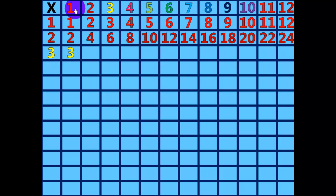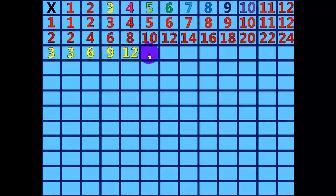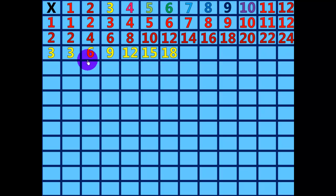3 times 2 equals 6. 3 times 3 equals 9. 3 times 4 equals 12. 3 times 5 equals 15. 3 times 6 equals 18. 3 times 7 equals 21.